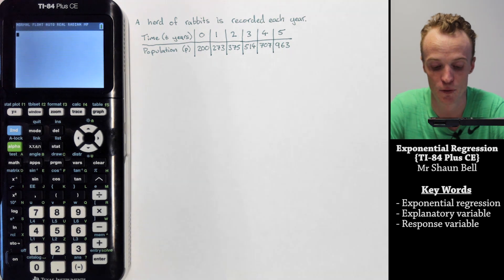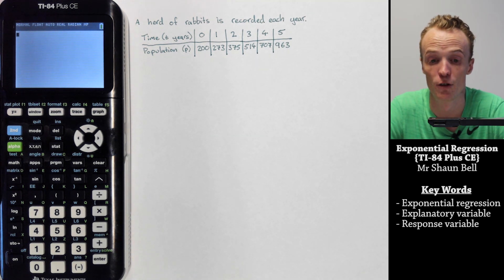In this case we've got a herd of rabbits and we're recording the population each year. The response variable is going to be the population with our explanatory variable being the time. So our time of T years will be X when we enter it into our calculator.